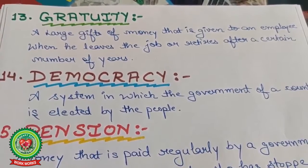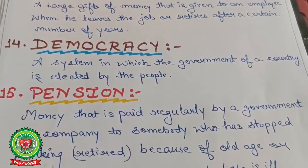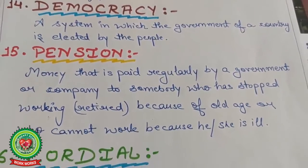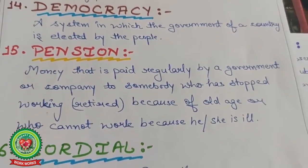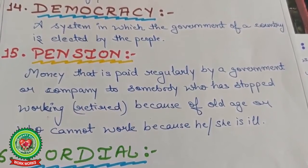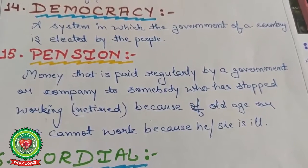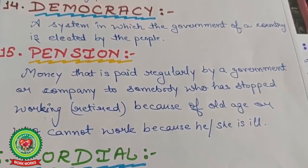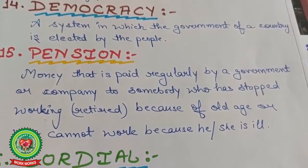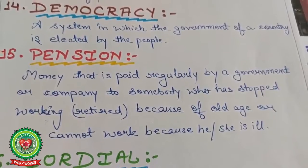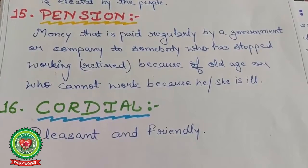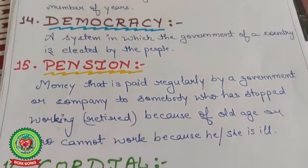Fourteenth word: democracy — a system in which the government of a country is elected by the people, like India. Fifteenth word: pension — money paid regularly by a government or a company to somebody who has stopped working because of old age or who cannot work because of illness. The company or government provides pension money to the retired person on a monthly basis. Next word: cordial — pleasant and friendly.